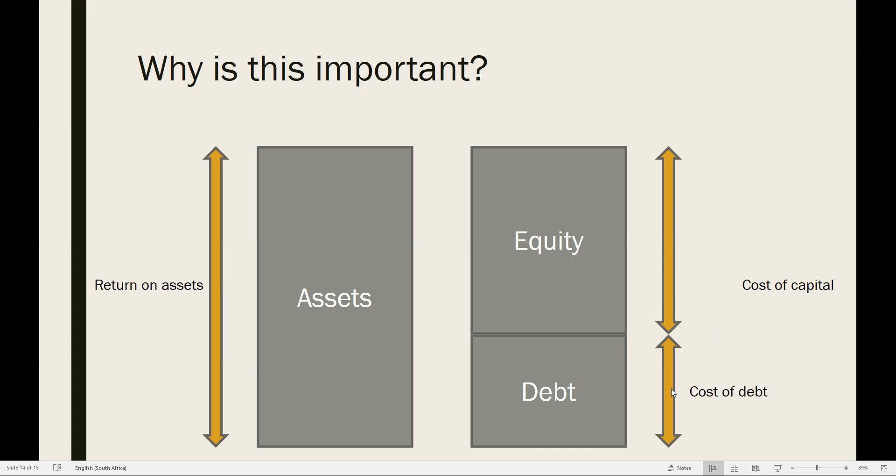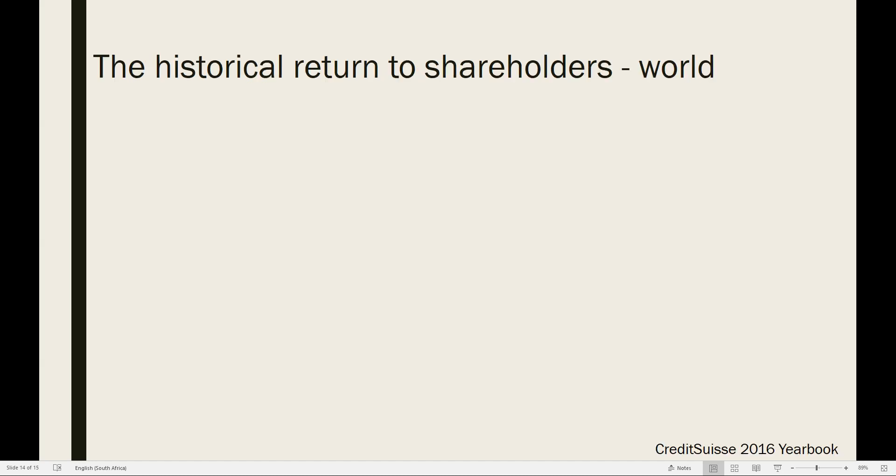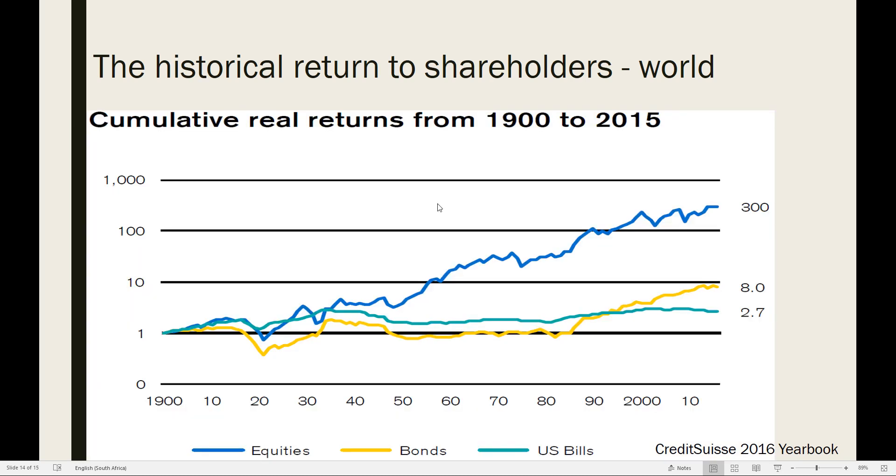So the cost of debt is easy enough. It's basically a case of looking at what interest rates are, what is the bank charging, or what do bondholders want, and more of that in another talk. But what we're focusing on today is what is the cost of equity? What do shareholders want, and what should they get? So that's our starting point. Now, to begin with, it would be helpful for us to go and look at a bit of history. What have shareholders actually had? And we're going to look across the whole world. So everything's going to be in dollars, and we're going to use the Credit Suisse data, which goes back to 1900. So we've got, in fact, 116 years of data here.